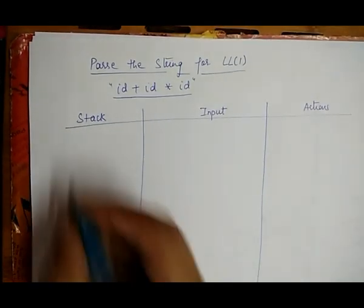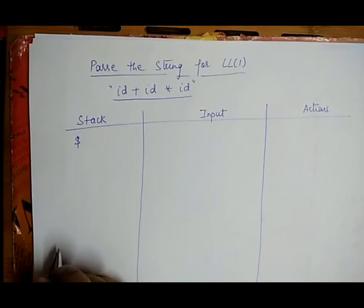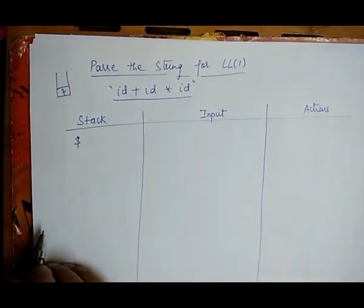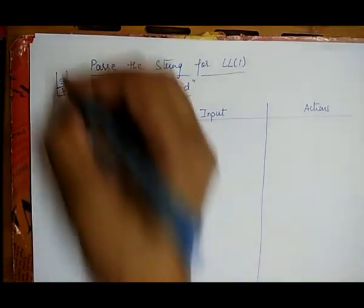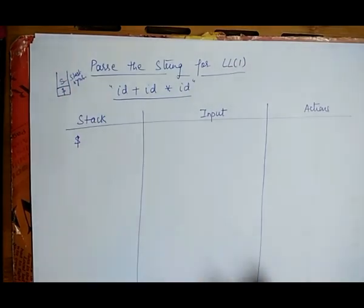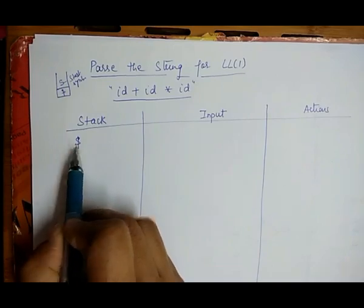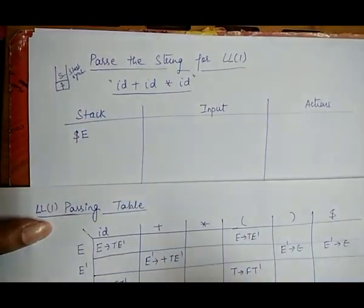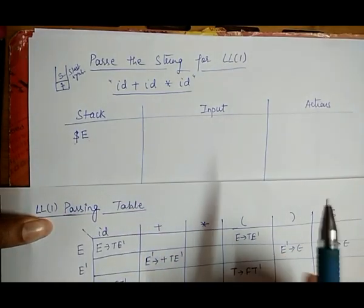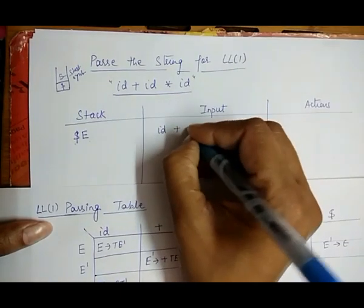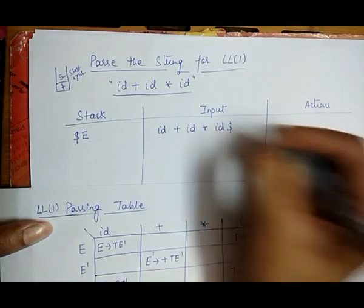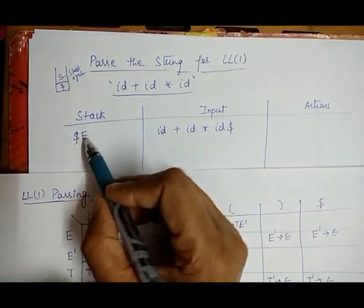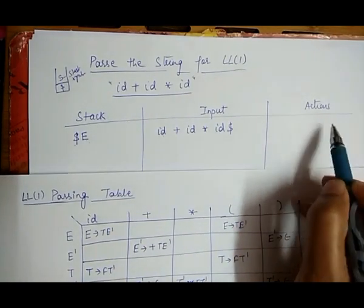The bottom of the stack always contains dollar, and the top of the stack always contains the starting symbol. So initially the stack contains dollar and the starting symbol E. The input is id plus id into id, and it is always followed by dollar, so input is: id plus id into id dollar.